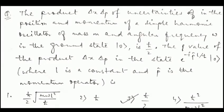In this video we are going to discuss a question from the CSIR-NET December 2018 paper. It is a question of quantum mechanics. It asks: the product Δx·Δp of uncertainties in the position and momentum of a simple harmonic oscillator of mass m and angular frequency ω in the ground state (n=0) is ℏ/2. This is given information.